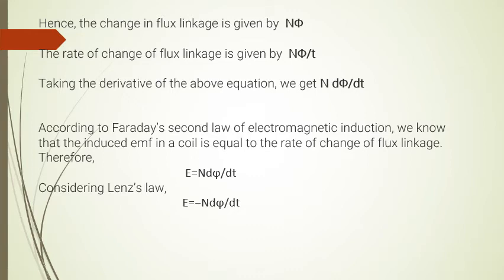According to Faraday's second law of electromagnetic induction, the electromagnetic force in a coil equals the rate of change of flux. Therefore, EMF equals N times d-phi over d-t, with a negative sign contributed by Lenz's law. The negative sign shows that the induced current opposes the change that caused it — its direction is opposite to the original.